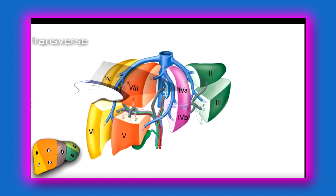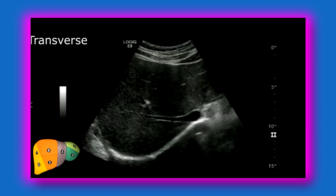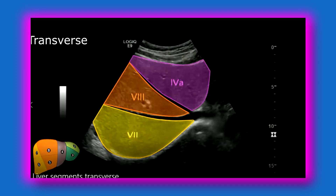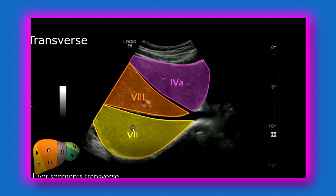Now scanning the superior segment of the right lobe in transverse — there you have your hepatic veins. Here you have 4A, 8, and 7, so you're scanning around right here. You'll see that your middle hepatic vein separates 4A from 8, and your right hepatic vein separates 8 from segment 7.